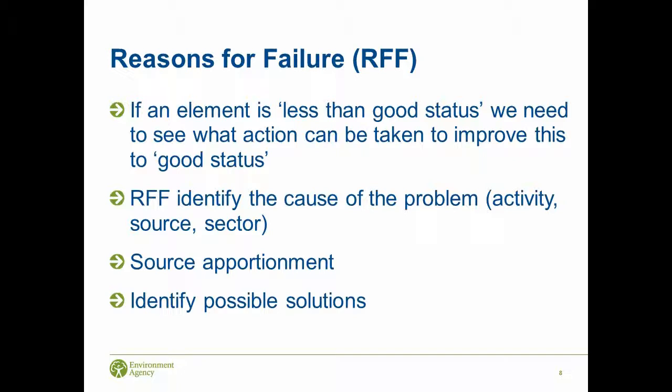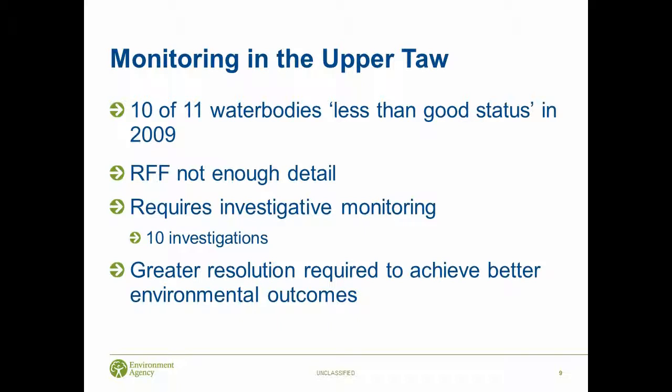Bringing this back to the upper Toul itself, there are 11 water bodies and the partnership focuses on 10 of these water bodies that are less than good status as of 2009. The reasons for failure database isn't really detailed enough - we've got information on major sources of problems but we need more detail. This has led to investigative monitoring, which is aside from our statutory monitoring. Once we diagnose a problem we can investigate it further, and there are currently 10 investigations in the upper Toul itself.